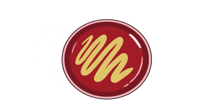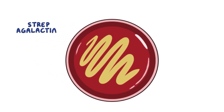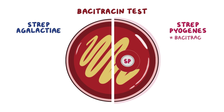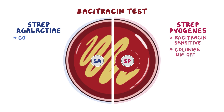Some other streptococcus species, like strep agalactiae, are also beta-hemolytic. So a bacitracin test is done to distinguish strep pyogenes — a disc of bacitracin is added to the blood agar. Strep pyogenes is bacitracin-sensitive, so the colonies die off, whereas with strep agalactiae the colonies remain intact.